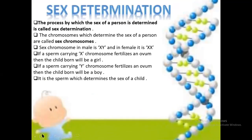Sex determination is the process by which the sex of a person is determined. The chromosomes which determine the sex of a person are known as sex chromosomes. Sex chromosomes in the male are XY whereas in the female they are XX. If a sperm carrying an X chromosome fertilizes an ovum, then the child will be a baby girl. If a sperm carrying a Y chromosome fertilizes an ovum, then the child will be a baby boy. It is the sperm which determines the sex of an offspring.